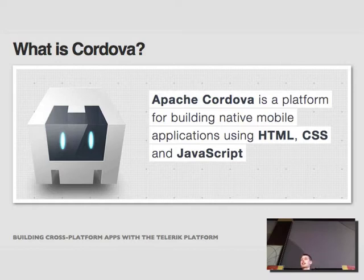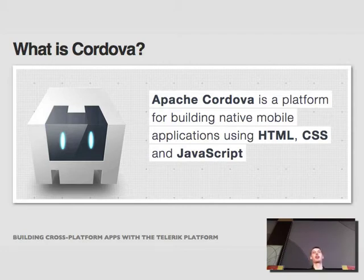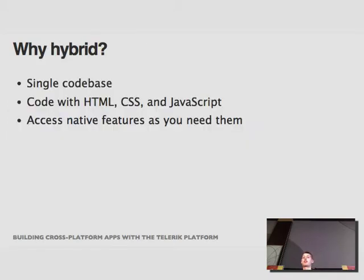The other thing Cordova does is give you access to native device features. On iOS, Android, and Windows Phone, all three platforms have a bridge that allows JavaScript code running in a web view to communicate with a native layer — calling Objective-C APIs, Java APIs, C# APIs on their respective platforms. Cordova gives you an abstraction to go from JavaScript to the native world. The advantage is that you're writing your app in web technology, so if you know the web, it's a great way to get into native app development.